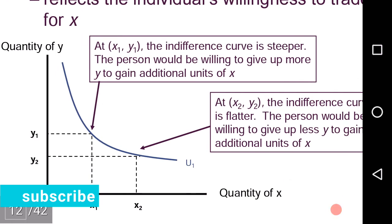At point x1, y1, the indifference curve is steeper. The person would be willing to give up more of y to gain an additional unit of x. So, to attain more units of x, the consumer is ready to give up more units of y.